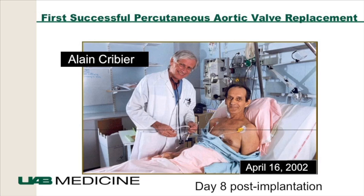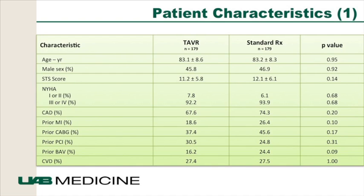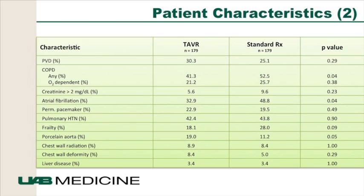A couple of years ago there was a celebration of the 10th anniversary of TAVR being performed in humans. The first large-scale randomized trial was the PARTNER trial, with two cohorts, A and B. Cohort B was published first, looking at TAVR versus medical therapy for inoperable aortic stenosis, published in the New England Journal of Medicine. In these high-risk patients with a mean age of 83 and an STS score of 11.2 — anything above 10% is deemed high risk — with the majority in class 3 or 4 heart failure, there was a significant benefit with TAVR.